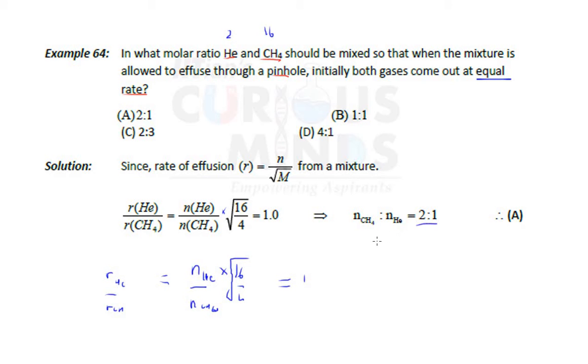Means if you take 4 moles of methane, you will take 2 moles of helium. If you take 20 moles of methane, you should take 10 moles of helium in that mixture. So this is the molar ratio.